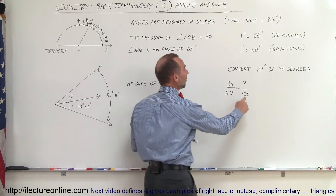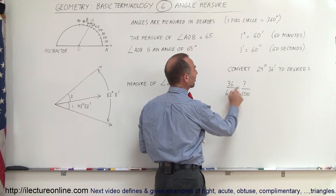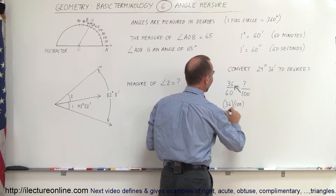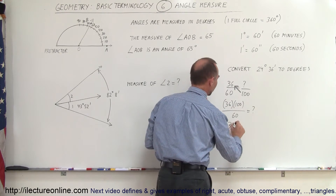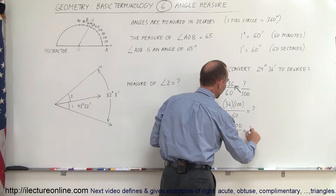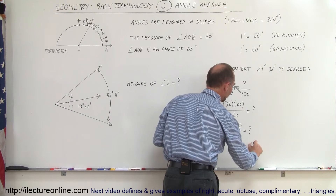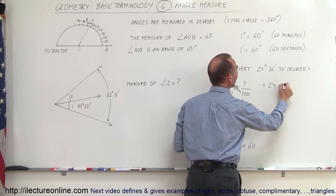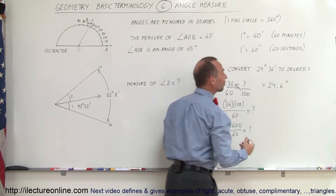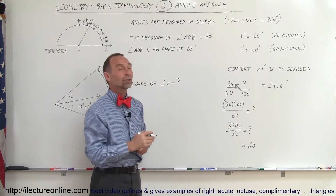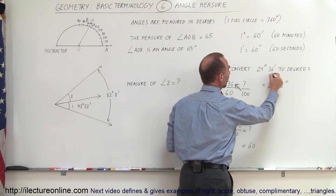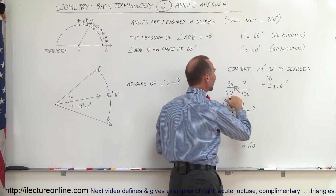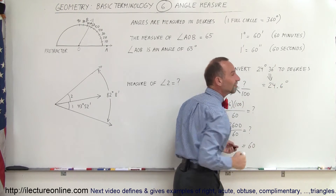We multiply by 100 and divide by 60 to get the number we're looking for. So 36 times 100 divided by 60 equals 3600 divided by 60, which equals 60 — or 60 hundredths. Therefore, this can be written as 24.60 degrees, because 0.60 is the same as 60 hundredths of a degree. That's how we convert from degrees and minutes into degrees and fractions of a degree. So 36 out of 60 is the same as 60 out of 100, which is 0.6 of a degree.